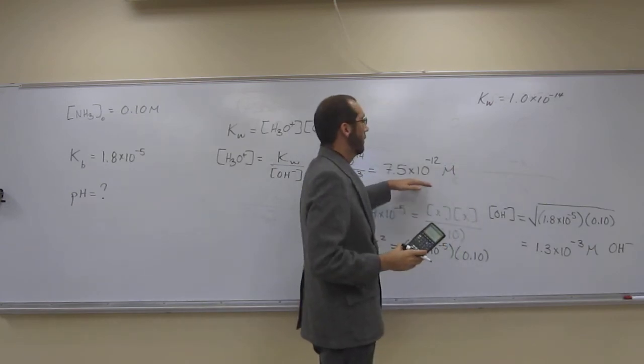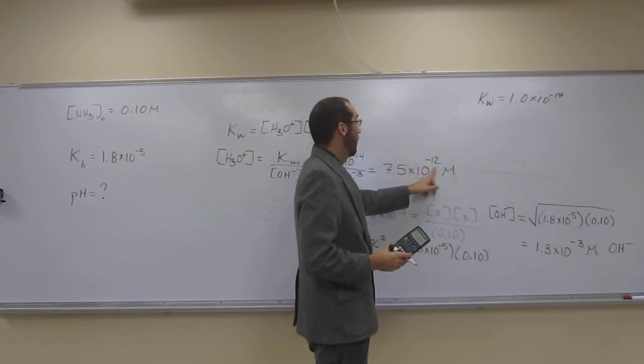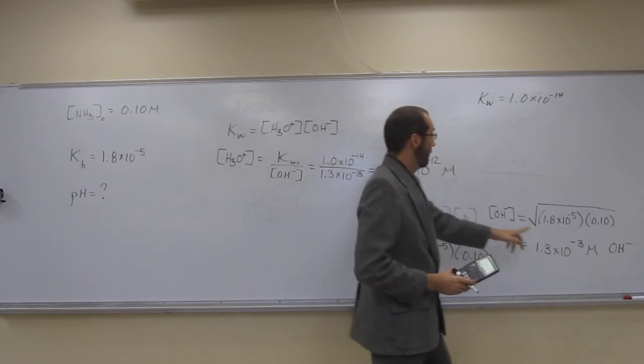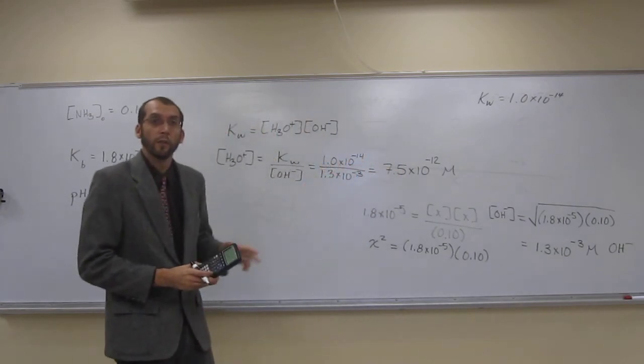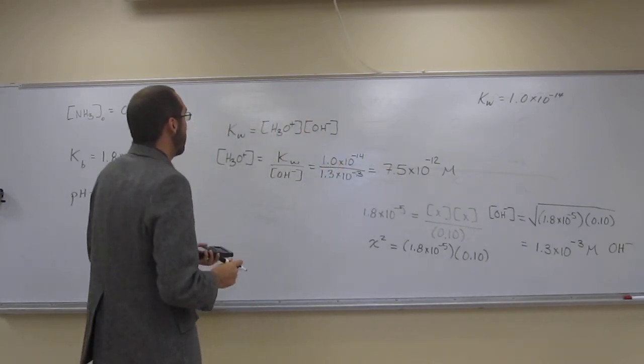So that's hydronium ions, and we would expect that to be very small because this one's relatively large. They're going to be inverses of each other.